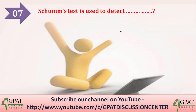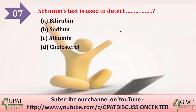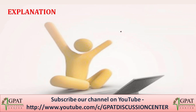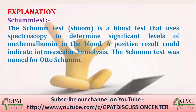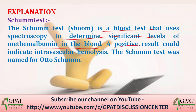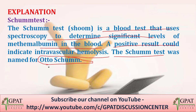Next question: SCUM test is used to detect — options are A) bilirubin, B) sodium, C) albumin, D) cholesterol. The SCUM test is used to detect albumin. The SCUM test is a blood test that uses spectroscopy to determine significant levels of methalbumin in the blood, and a positive result could indicate intravascular hemolysis. So the correct answer is albumin, option C.